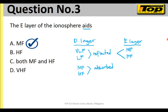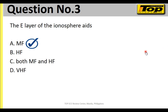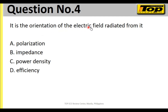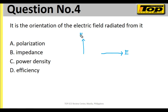Number three, letter A. Next number — question number four. It is the orientation of the electric field radiated from an antenna. If the electric field is oriented vertically, we call it vertically polarized; if horizontally, horizontally polarized. The electromagnetic wave is either vertically or horizontally polarized depending on the electric field. The definition being referred to is of course polarization. Number four, letter A.